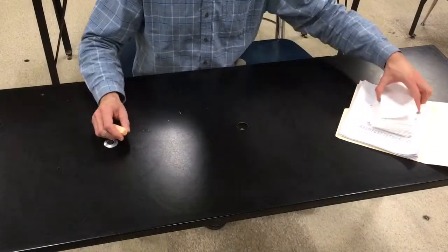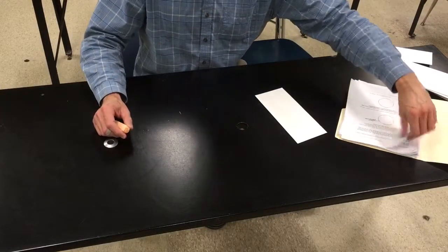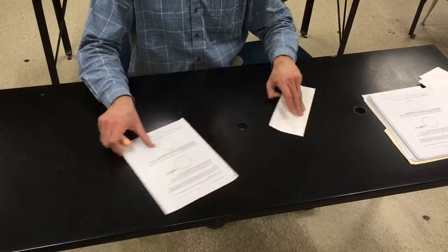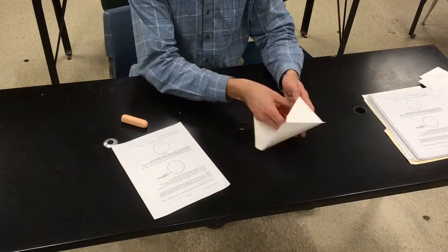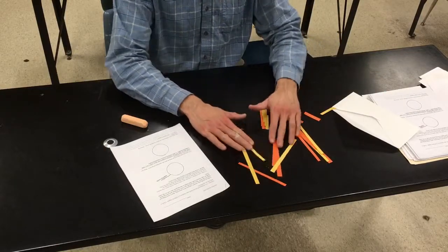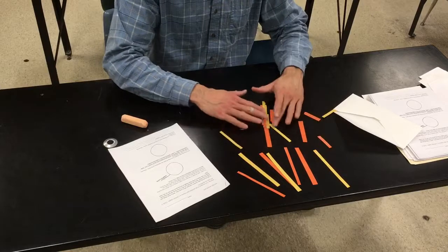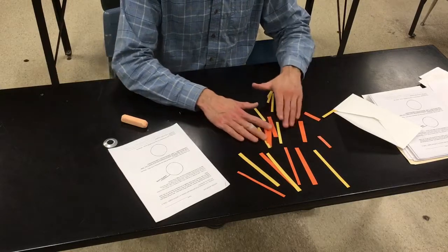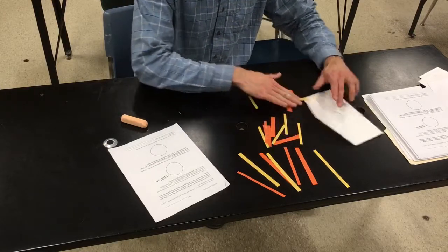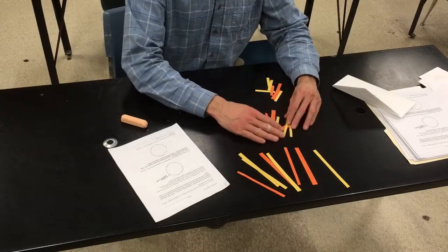Hey guys, let's take a look at the meiosis modeling lab. You're going to need an envelope and a lab handout. Inside the envelope are pretend chromosomes sorted by size. These long ones are chromosome one, these medium-sized ones are chromosome two, and these smaller ones are chromosome three. I don't think you'll need all of them, but there you go.